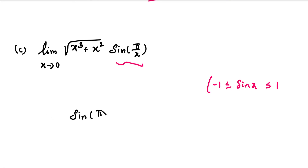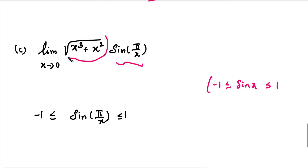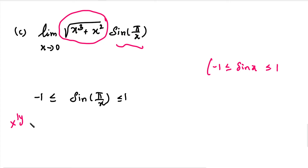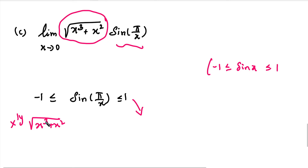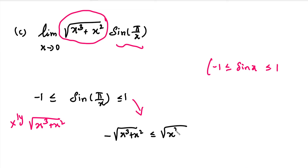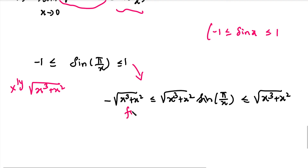Now for the third problem: limit x tends to 0 of √(x³ + x²) · sin(5/x). Since sin(5/x) has a value between minus 1 and plus 1, we apply the inequality and multiply through by √(x³ + x²). This gives: minus √(x³ + x²) ≤ √(x³ + x²) · sin(5/x) ≤ √(x³ + x²). This matches the form f(x) ≤ g(x) ≤ h(x).